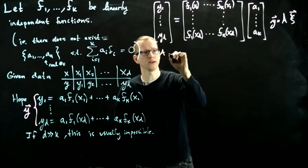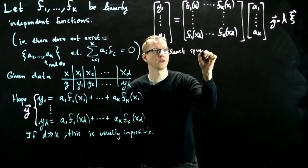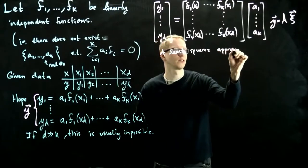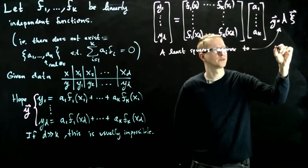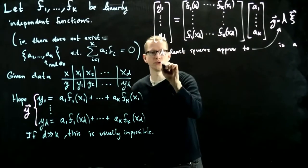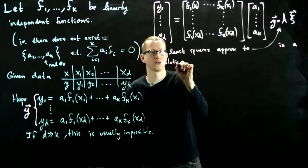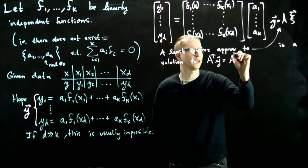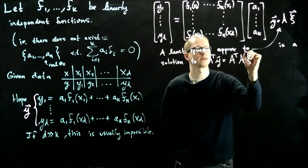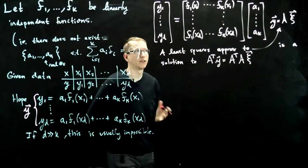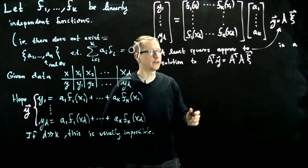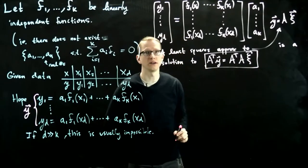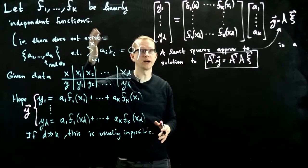A least-square solution, or approximation to this, is an actual solution to A transpose y equals A transpose A*xi. So just apply A transpose on the left, on both sides. This is generally what we're going to solve for, and this will be fitting our data to the set of functions defined by these.